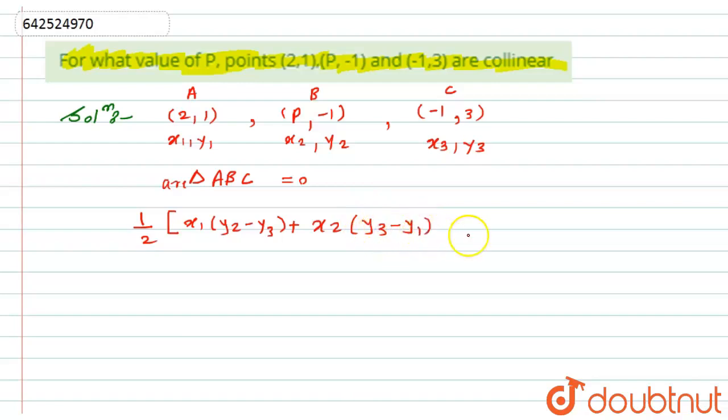-y₁) + x₃(y₁-y₂)] is equal to zero. Now I will put the values as I have considered above. So this 1/2 will be as it is. Now I will put the values: that is 2 in bracket (-1-3) plus x₂ is nothing but